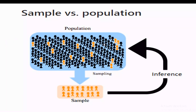This illustrates sample versus population. The population is a collection or group of individuals, items, or things under our study interest. A sampling technique is used to obtain the sample, and we can then see the sample data applied in inferential statistics.